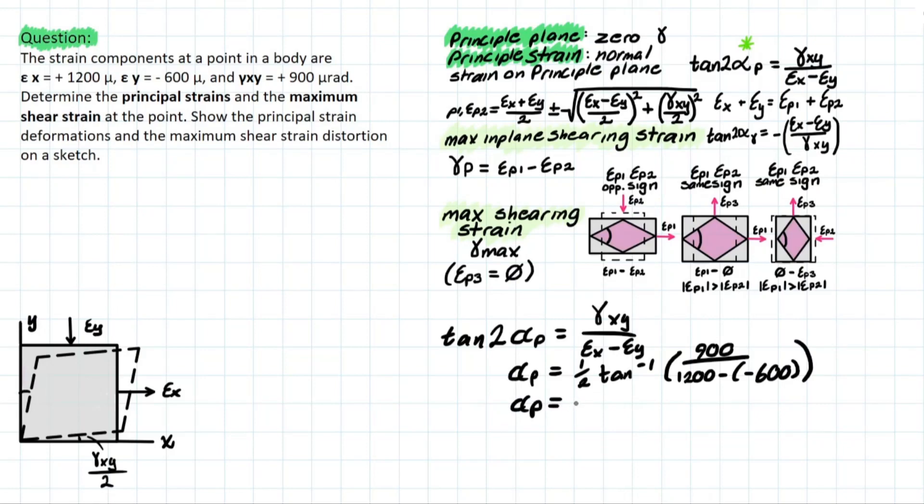Solving for αP, we will be left with 13.28 degrees, and we're left with a positive value, meaning that we are going counterclockwise from X.